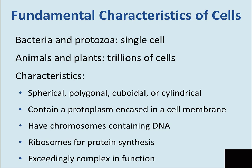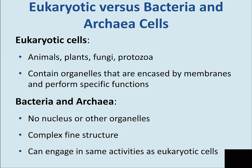Bacteria and protozoa are single-celled; animals and plants are made of trillions of cells. All the chemistry we discussed plays out within these organisms. Cell characteristics — spherical, polygonal, cuboidal — all arise from the underlying biochemistry. All cells contain chromosomes with DNA, ribosomes for protein synthesis, and are exceedingly complex in function. All of this flows from the basics of the biochemistry we've discussed — simple subunits coming together to make the extraordinary thing called life.